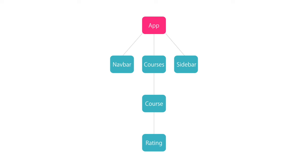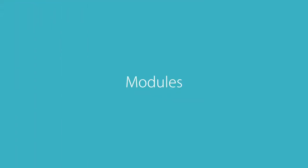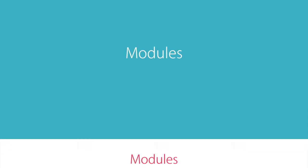Now, in Angular, we also have another concept called modules. A module is a container for a group of related components. Every Angular app has at least one module, which we call the app module. As your application grows, you may want to break that module into smaller, more maintainable modules.